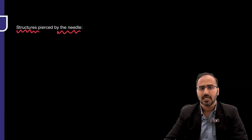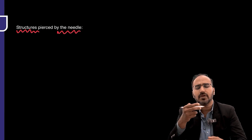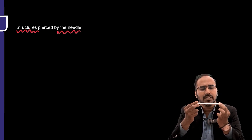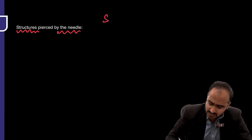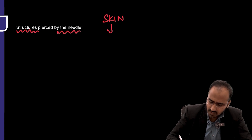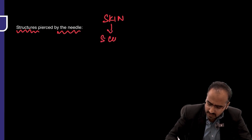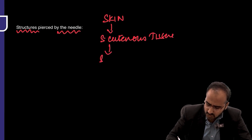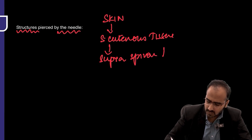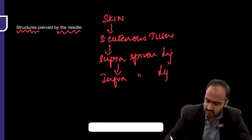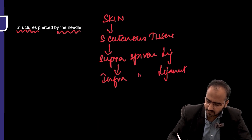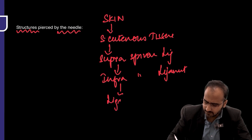The layers encountered during spinal anesthesia, starting from the skin at the back of the patient as you introduce the needle: the first layer pierced is the skin, followed by subcutaneous tissue, supraspinous ligament, interspinous ligament, and then ligamentum flavum.